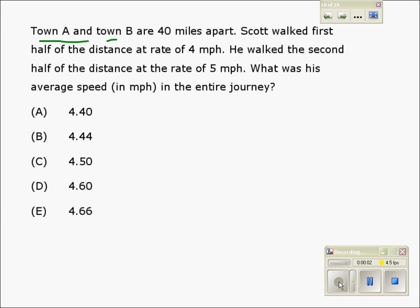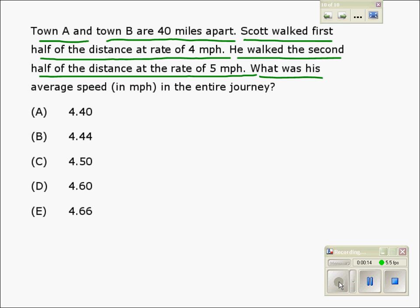Town A and Town B are 40 miles apart. Scott walked the first half of the distance at the rate of 4 miles per hour. He walked the second half of the distance at the rate of 5 miles per hour. What was his average speed in miles per hour in the entire journey?